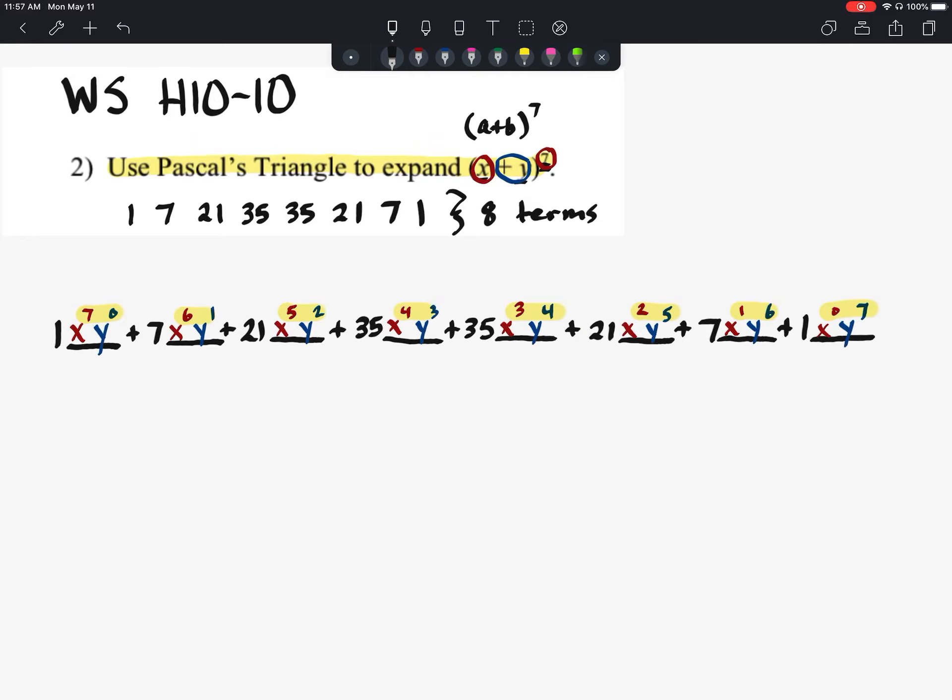Last part of this let's just simplify it. We've got x to the 7th plus 7x to the 6th y to the 1st plus 21x to the 5th y to the 2nd plus 35x to the 4th y to the 3rd plus another 35 but this one with x to the 3rd and then y to the 4th plus 21x squared y to the 5th plus 7x y to the 6th plus y to the 7th.